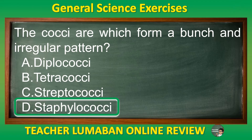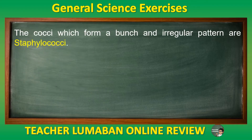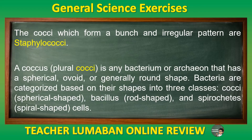The correct answer is Letter D: Staphylococci. The cocci which form a bunch and irregular pattern are Staphylococci. A coccus (plural cocci) is any bacterium or archaeon that has a spherical, ovoid, or generally round shape. Bacteria are categorized based on their shapes into three classes: cocci (spherical-shaped), bacillus (rod-shaped), and spirochetes (spiral-shaped).